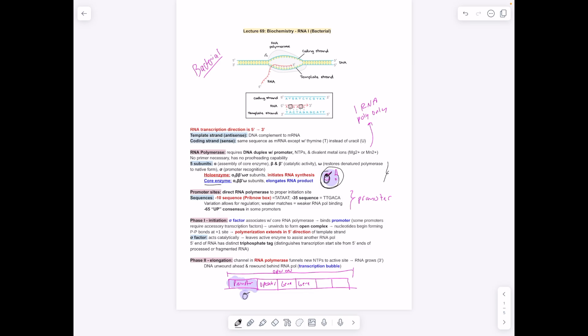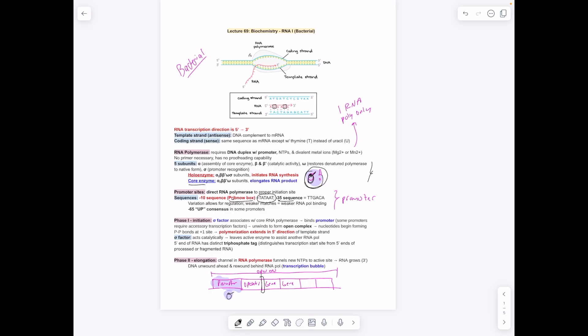In the promoter regions, you have minus 10, so 10 upstream from the start of transcription. You have the Pribnow box, which is the T-A-T-A-T, minus 35 region. There's also another one that's common, T-T-G-A-C-A.